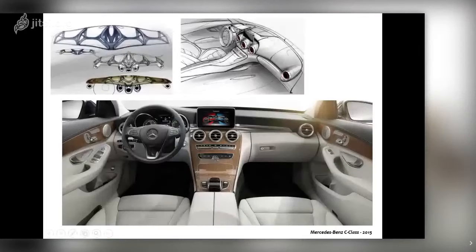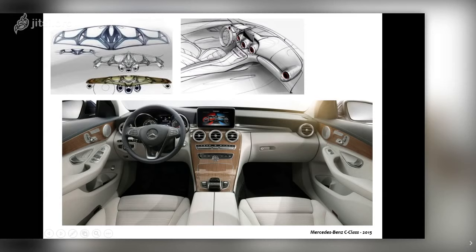Mercedes-Benz interiors often feature five air vents. The designer looked at the Mercedes-Benz DNA and found that Mercedes-Benz historically built aircraft — and in those aircraft you can find exactly five circular elements. In the sketch you see one, two, three, four, five, and in production also five elements for the vents. Mercedes-Benz is saying: I am using five circular elements because they are in my DNA. It is a very interesting design job connecting heritage to current design.